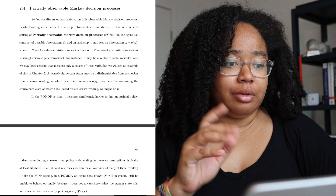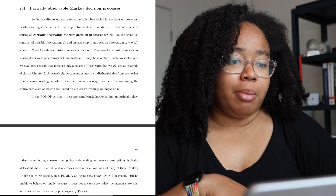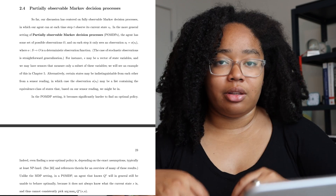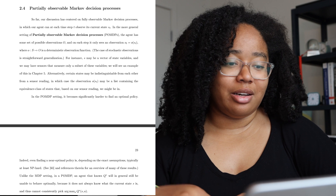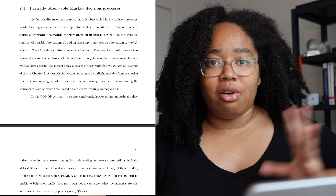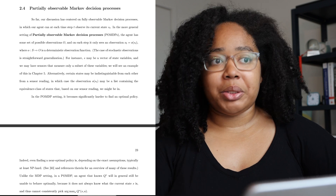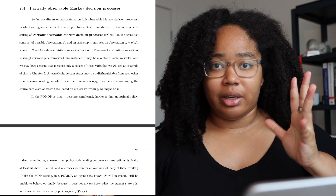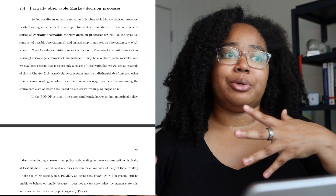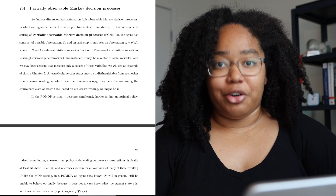The main difference between a Markov decision process and a partially observable one is that in a partially observable MDP, your agent — the thing moving from state to state and taking different actions — may not be able to fully see all the factors that might contribute to a decision. It may not have access to all the data it would need to make the correct action, and you have to figure out how to still optimize your reward under that circumstance.